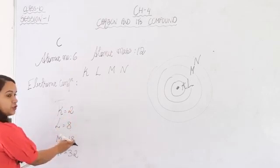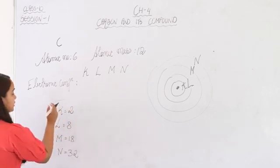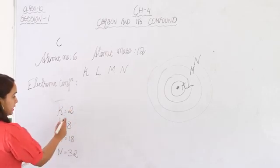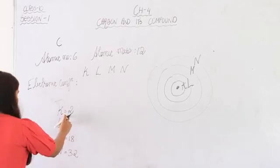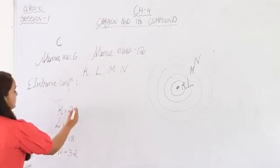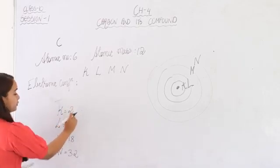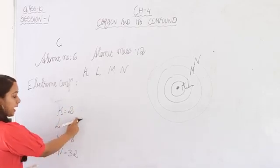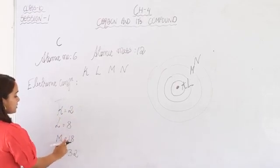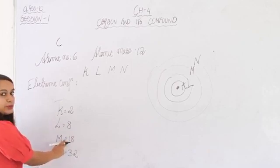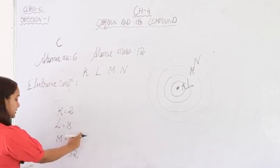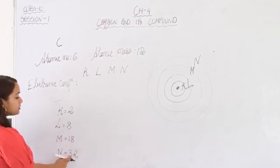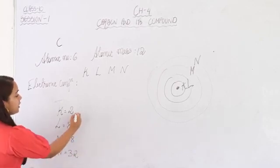These are the fixed number of electrons each shell can accommodate. The K shell cannot accommodate more than 2, L shell not more than 8, M shell not more than 18, and N shell not more than 32.